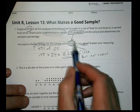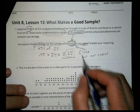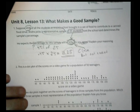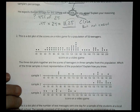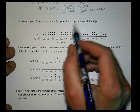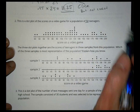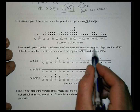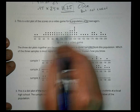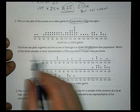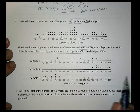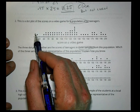If he picked a number that's a multiple of 9 it might work better, but 25 doesn't work out evenly. Problem 2 shows a dot plot of video game scores for a population of 50 teenagers, along with three sample dot plots. Which of the three samples is most representative of the population?